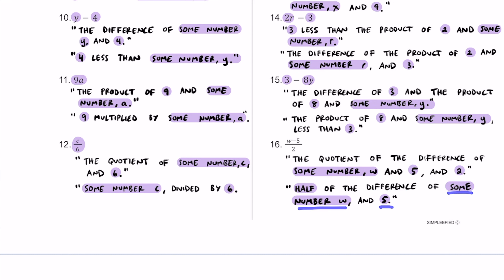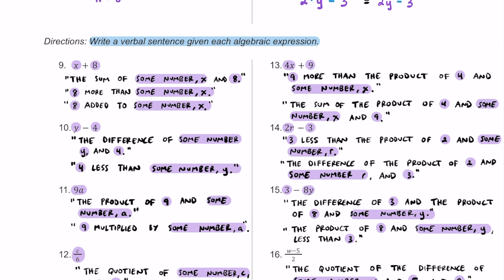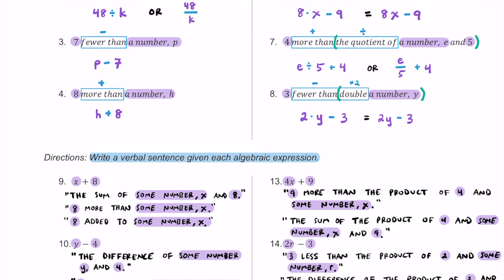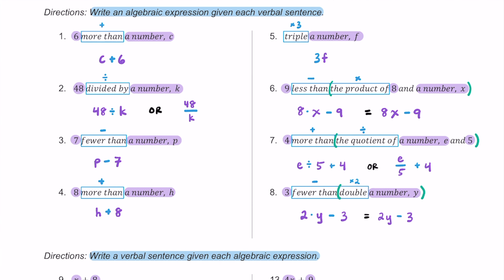There you have 16 different practice problems. The first eight took verbal sentences and wrote algebraic expressions; the second eight took algebraic expressions and wrote verbal sentences. When writing verbal sentences, keep in mind there are more ways of writing them — these are just some popular ones to know first. Feel free to write other ones as you practice your vocabulary. Hopefully you found this video helpful. Keep up the great work, and I'll see you in the next one.